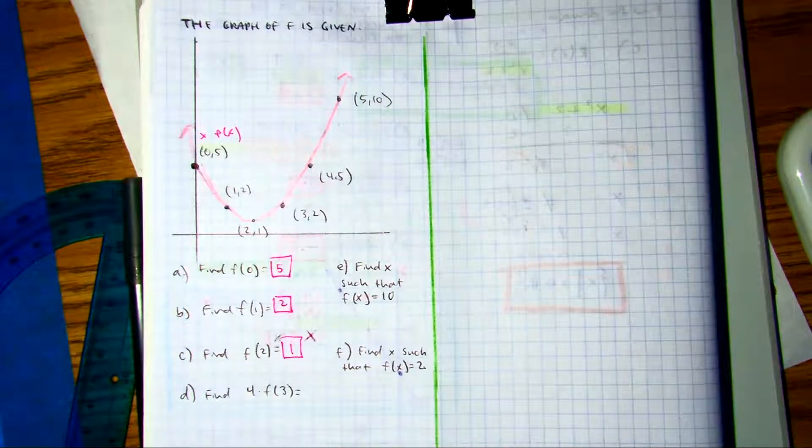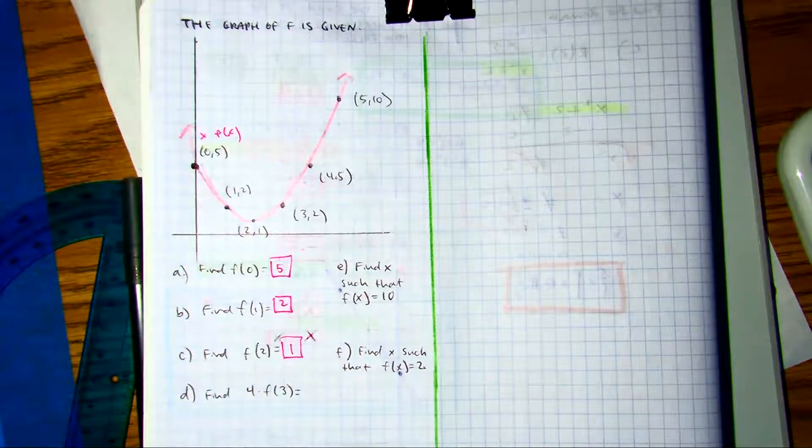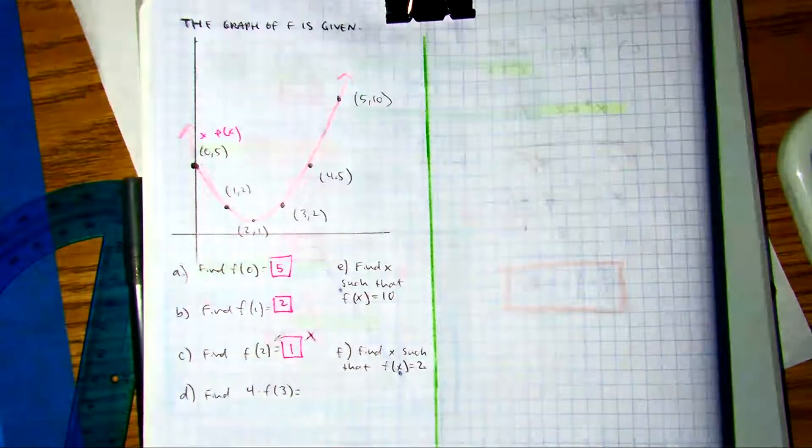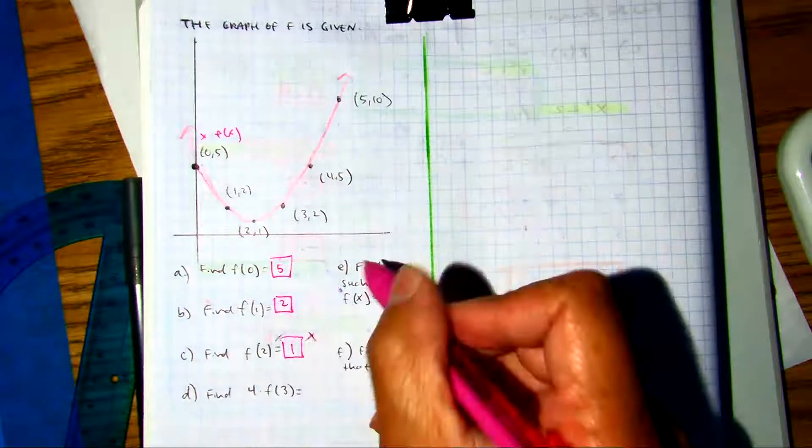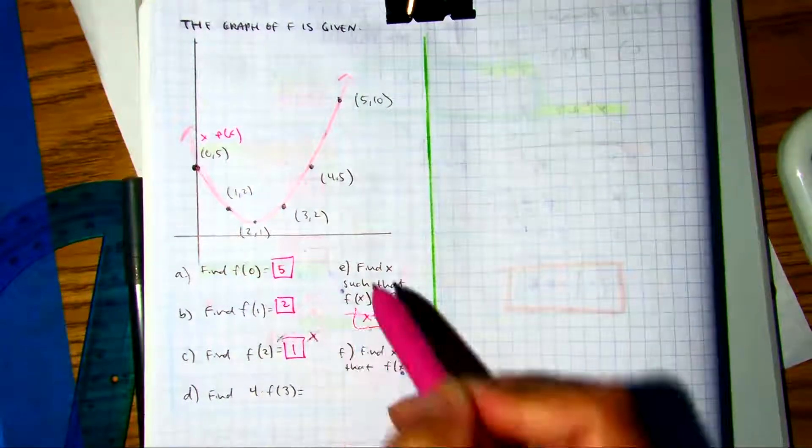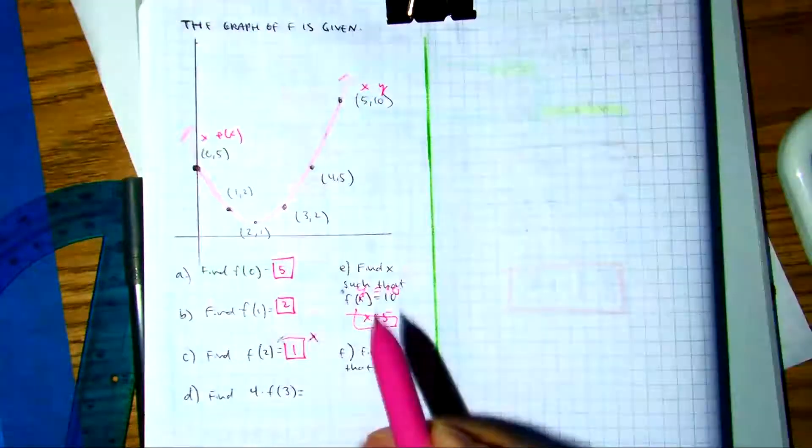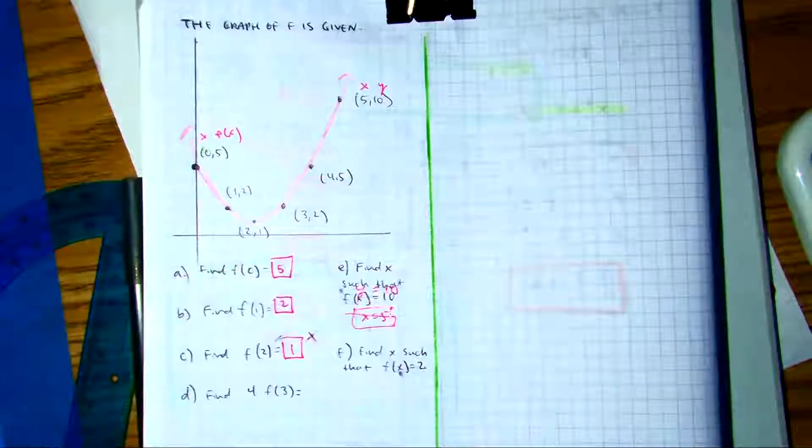X equals five. Raise your hand if you got that. Remember that's just an easier way of saying the Y value is 10. Y value is 10, X value is five. Pick the next person.